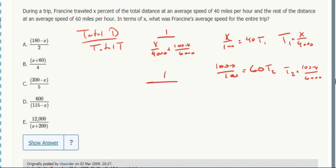So common denominator is 12,000, that's 3X plus 2X over 12, so that's 1 over X plus 200.